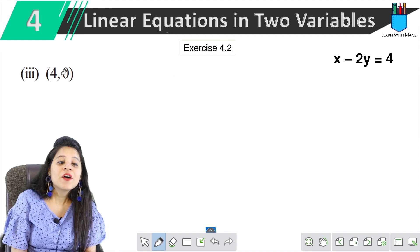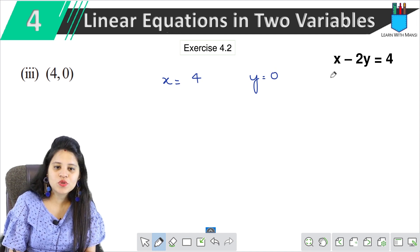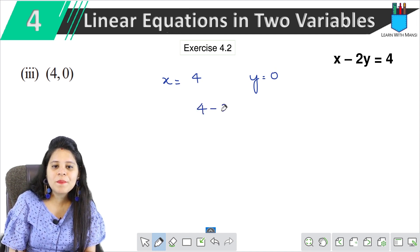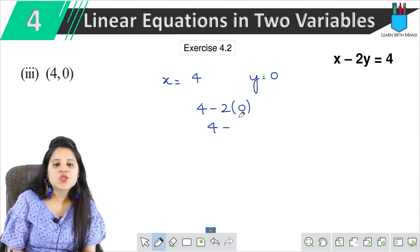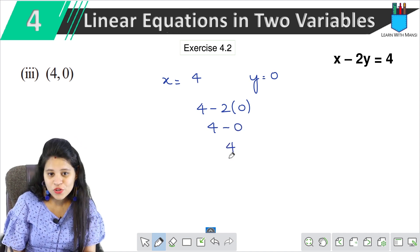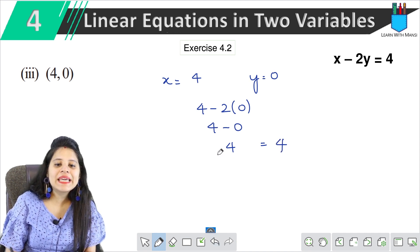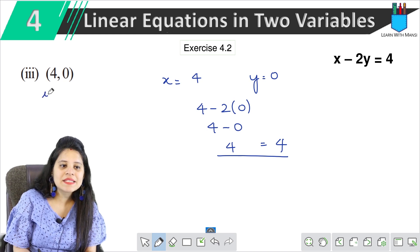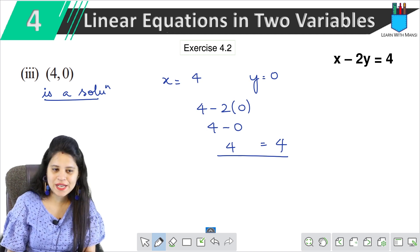Next part: (4, 0). That means x value is 4 and y value is 0. Let's see: x is 4, minus 2, y is 0. Now 4 minus 2 × 0 = 4 minus 0 = 4. So this equals 4 — this is a solution.